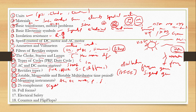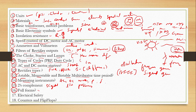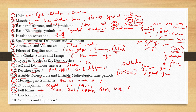We will discuss full forms. If you have full forms, you can use them: CCD, IOT, CDMA, GSM, networks, DOL, Star Delta. Full forms — if you have full forms, you can use them.